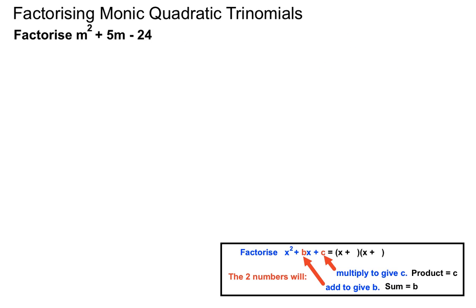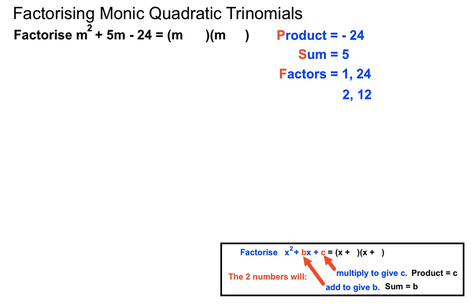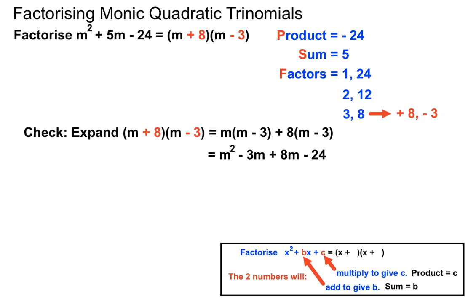One more example — they're not always x's: m squared plus 5m minus 24. We need a product of minus 24 and a sum of 5. Factors of 24: 1 and 24, 2 and 12, 3 and 8. Looking at 3 and 8 — they're 5 apart, so with the right signs, plus 8 and minus 3 will multiply to give minus 24 and add to give plus 5. The factorisation is (m + 8)(m − 3), and expanding confirms we get back to our original expression.